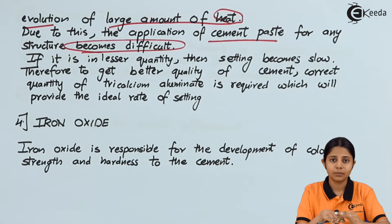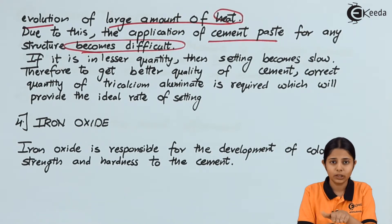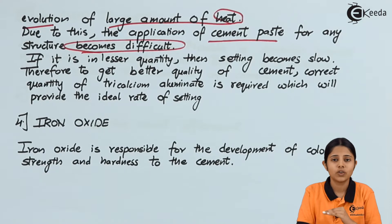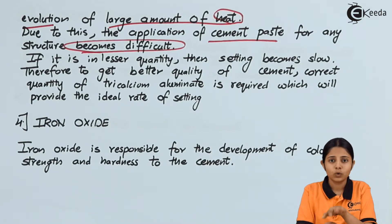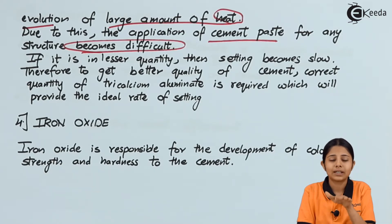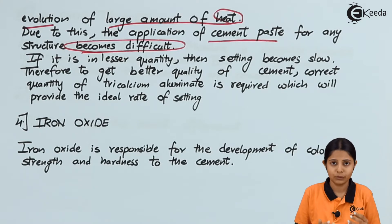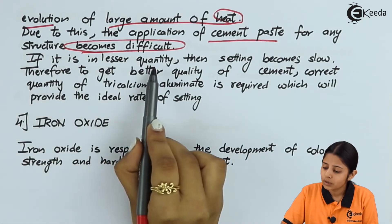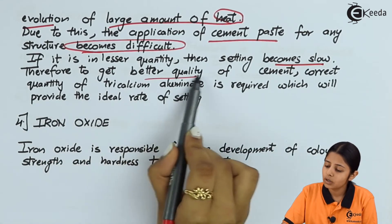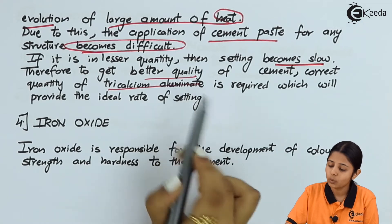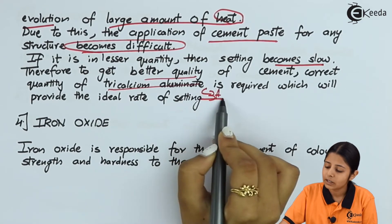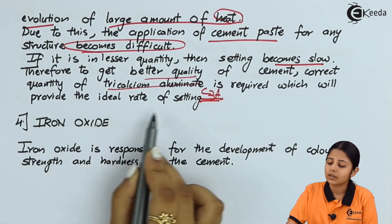Imagine applying cement to a brick and the setting happens very quickly — the crystallization happens before another brick is placed on top. If setting and crystallization have already occurred, the next brick placed on it will just fall off, because the cement no longer has a paste form to make bricks stick together. If alumina is in lesser quantity, then setting becomes slow. Therefore, to get better quality cement, the correct quantity of tricalcium aluminate (C3A) must be maintained, which will provide the ideal rate of setting.